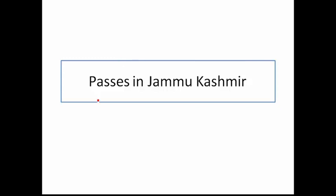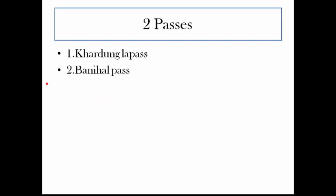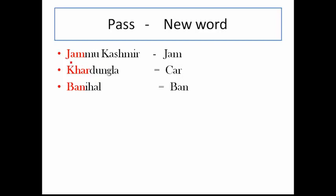First we are going to see passes in Jammu Kashmir. There are two important passes in Jammu Kashmir: Kardungla pass and Banihal pass. Our target is to remember these two pass names. Jammu Kashmir — the first three letters are J-A-M, just remember it as 'traffic jam.' Coming to Kardungla pass, here you can see K-H-A-R, its pronunciation is 'car,' so just remember Kardungla pass as 'car.' Coming to Banihal pass, here you can see B-A-N, 'ban,' which means stopped.